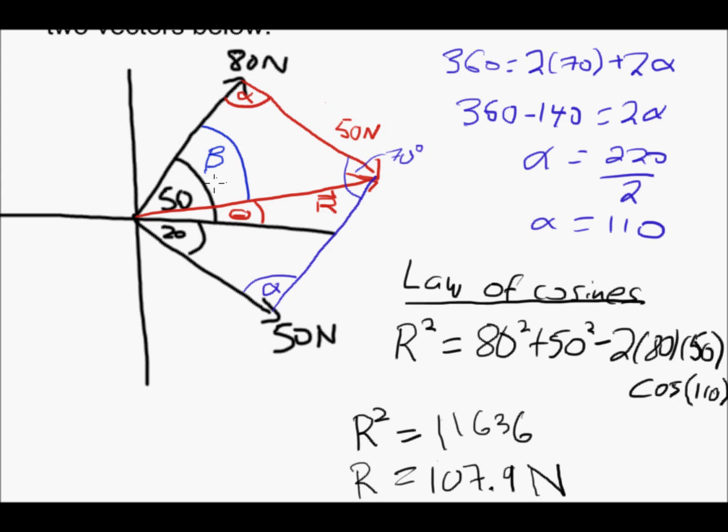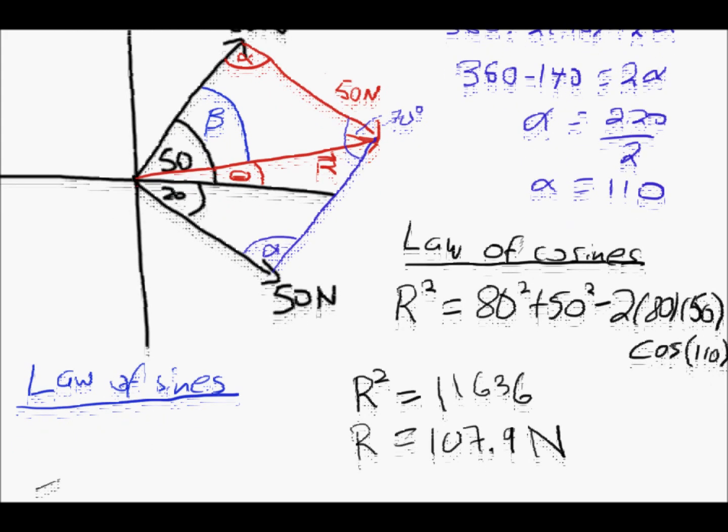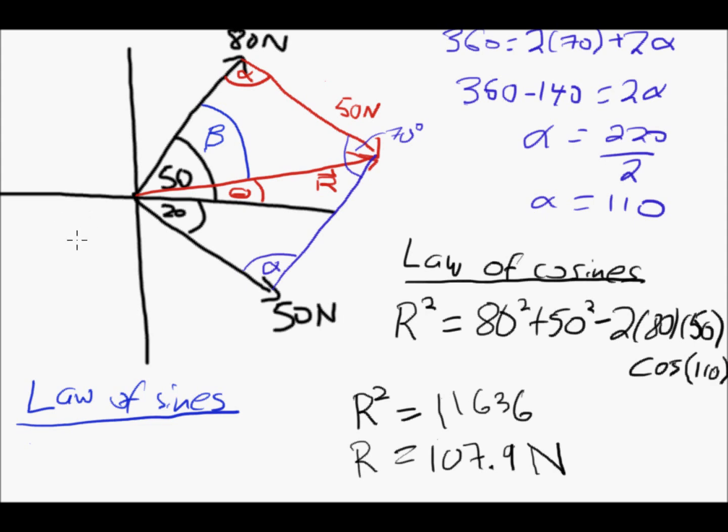And you can use the law of sines to find beta. Law of sines. So remember the law of sines works kind of like a ratio. I want to use the law of sines to find beta, which is here, and that allows you to find theta down here, the angle that the resultant is at. And I know the angle alpha up here is 110.